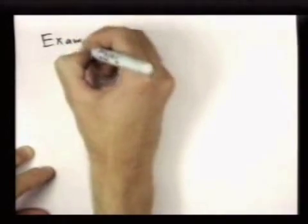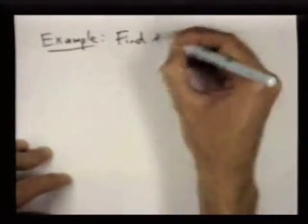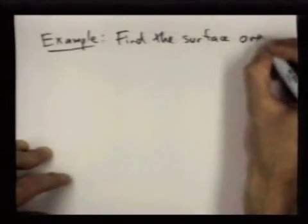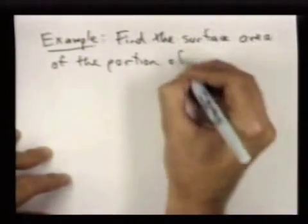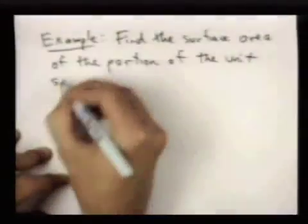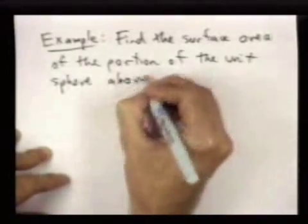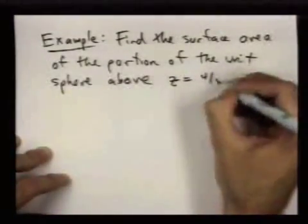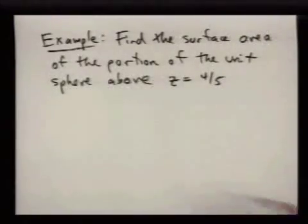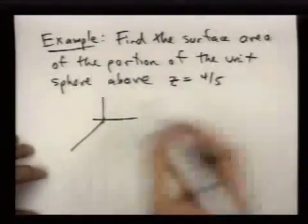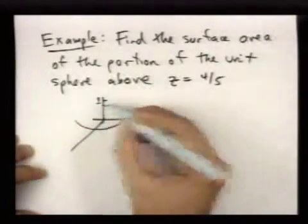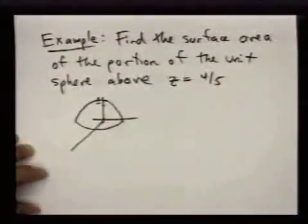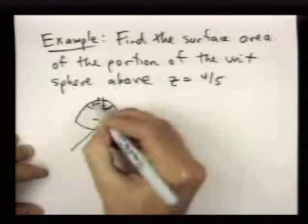Here's a harder example. So in this, let's say we want to find the surface area of the portion of the unit sphere above z equals 4 fifths. So this is going to be some kind of polar ice cap. So if I'm drawing the unit sphere, it'll look like this. And I'll put this as 1 and 4 fifths might be there. So here's this hemisphere. And I want to find the surface area of just the top part.